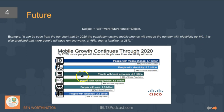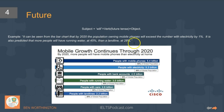'It is also predicted that more people will have running water at 45% than a landline at 28%.' The whole graph is set in 2020 — it's a prediction, so we're going to use the future tense.